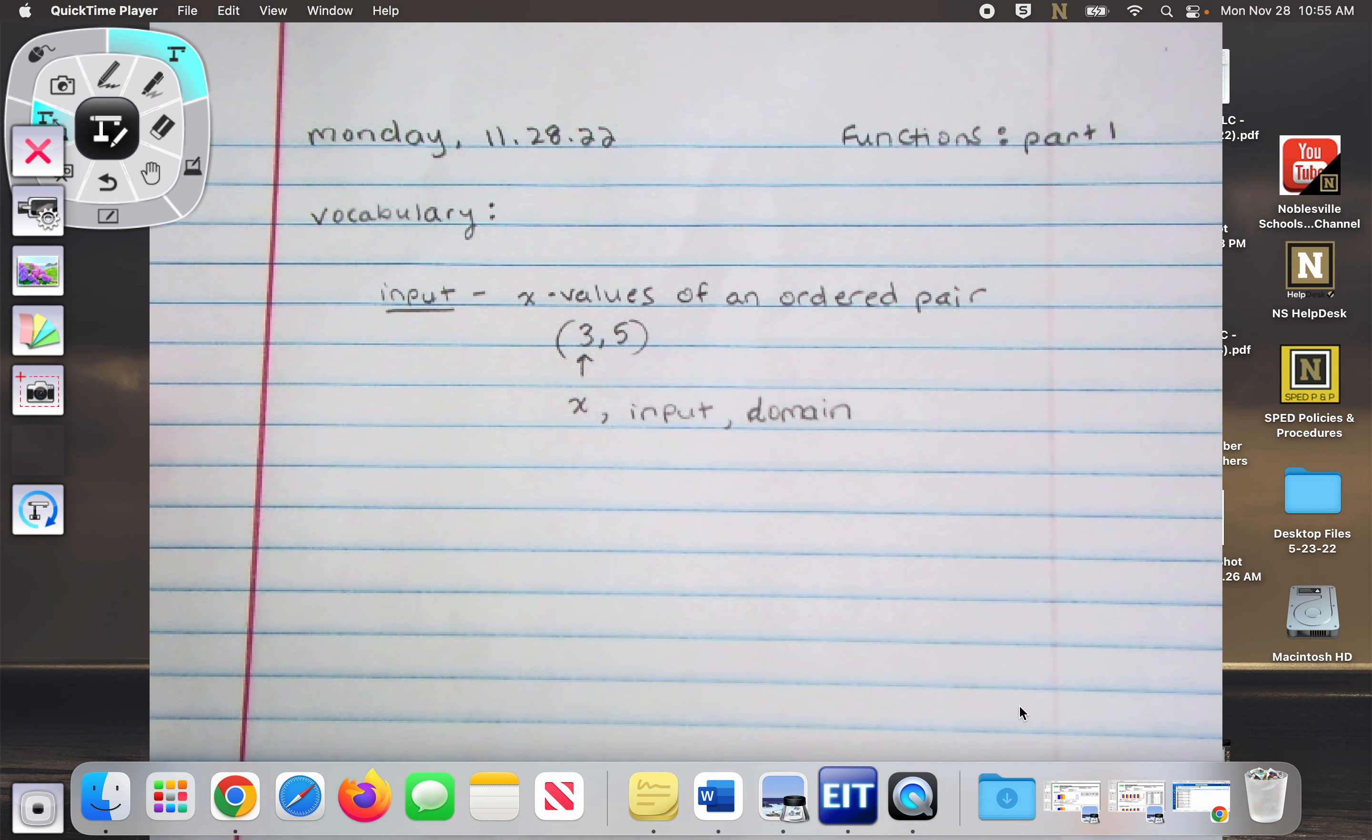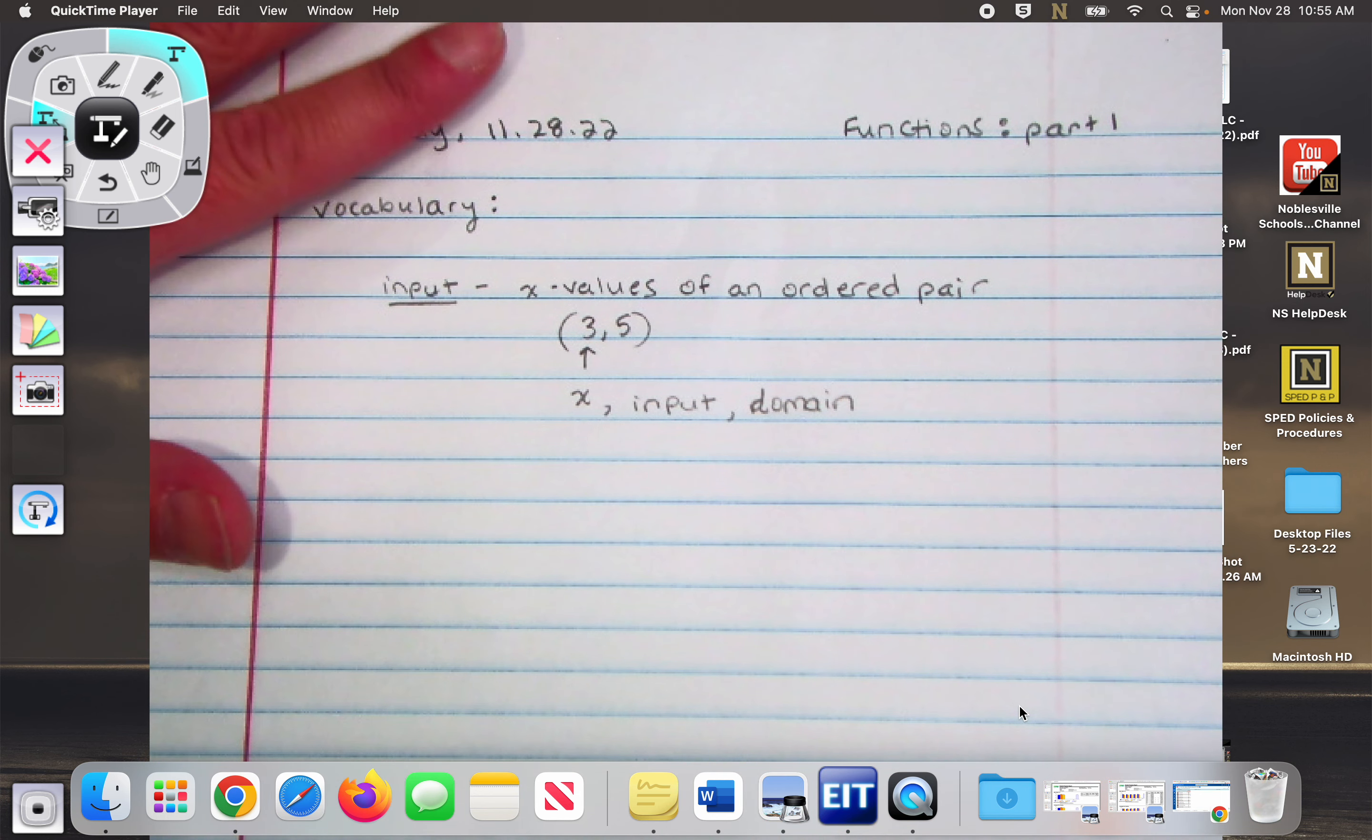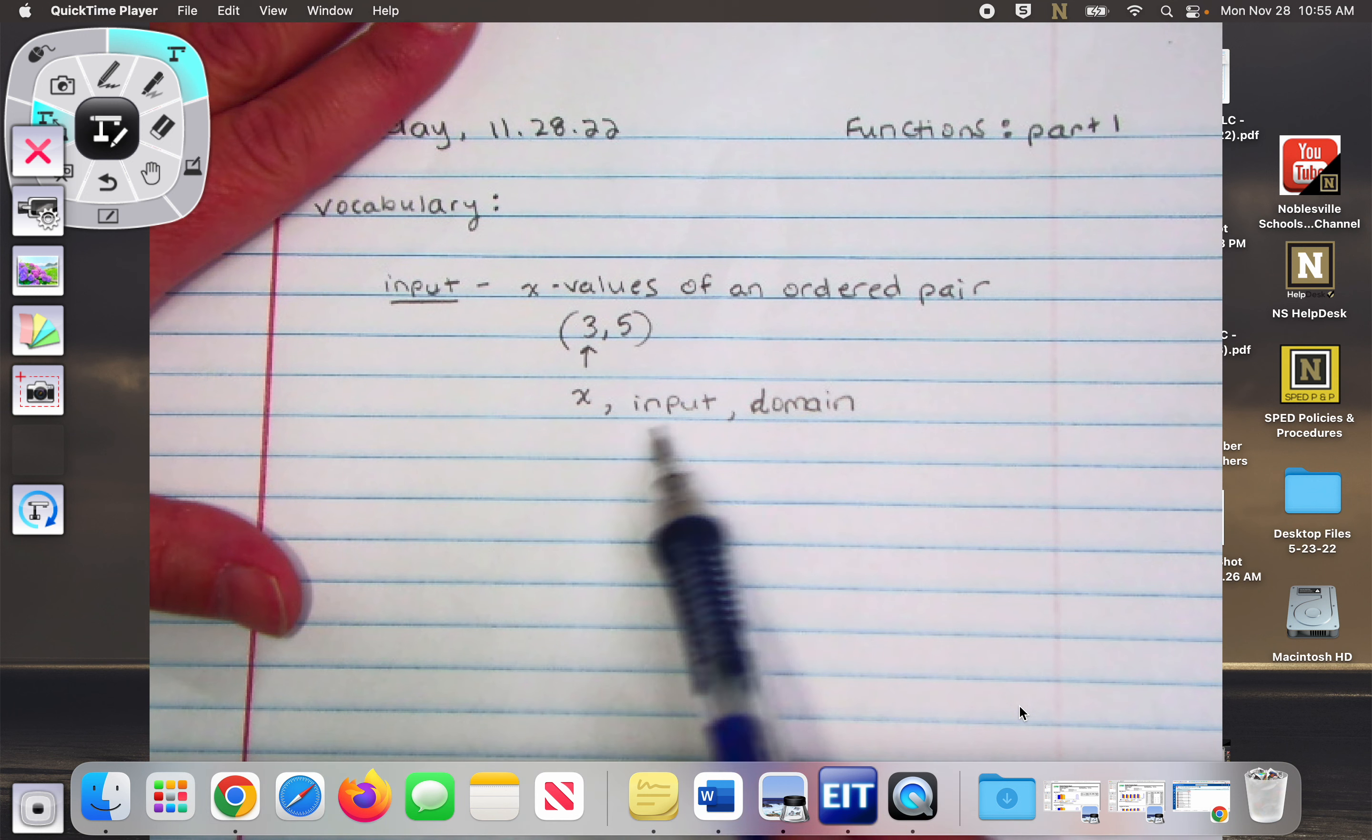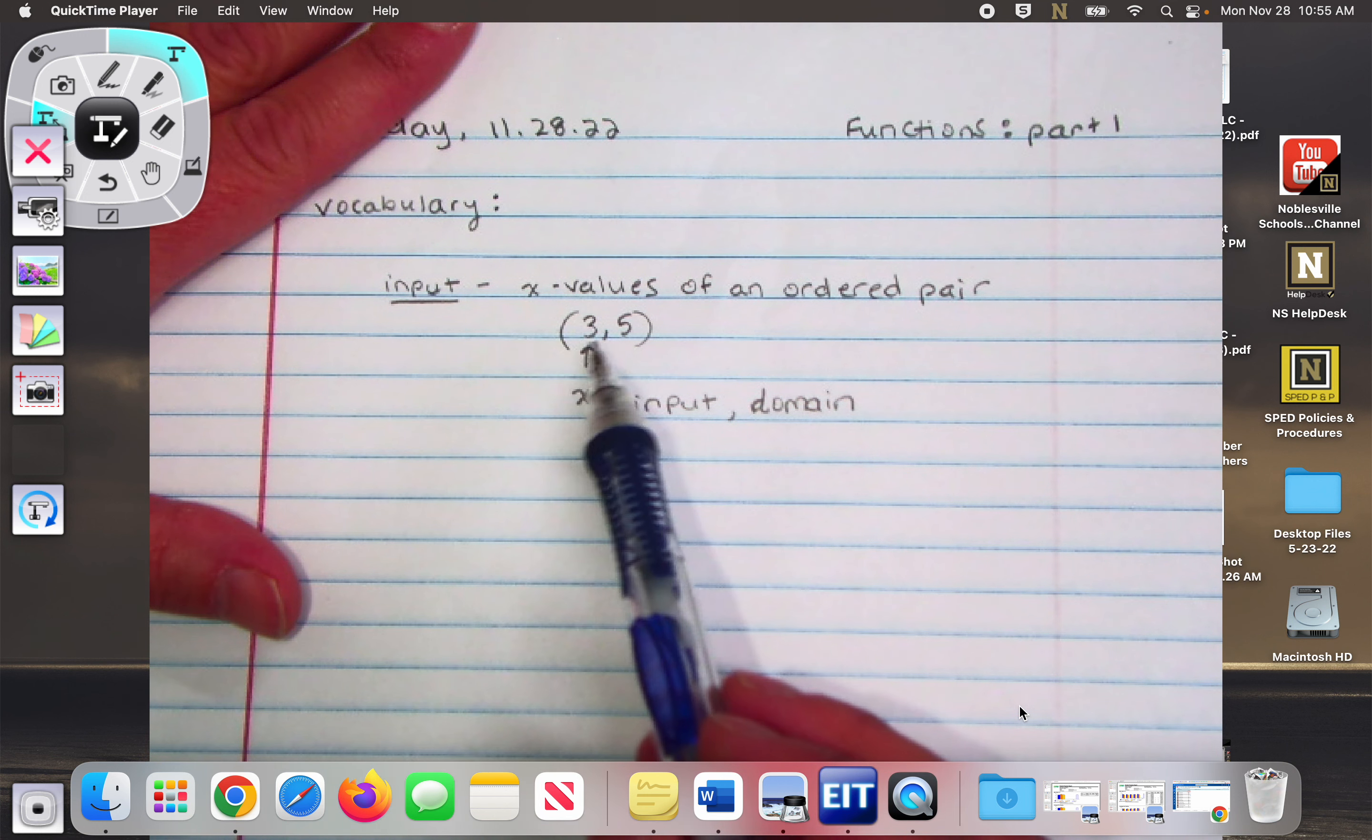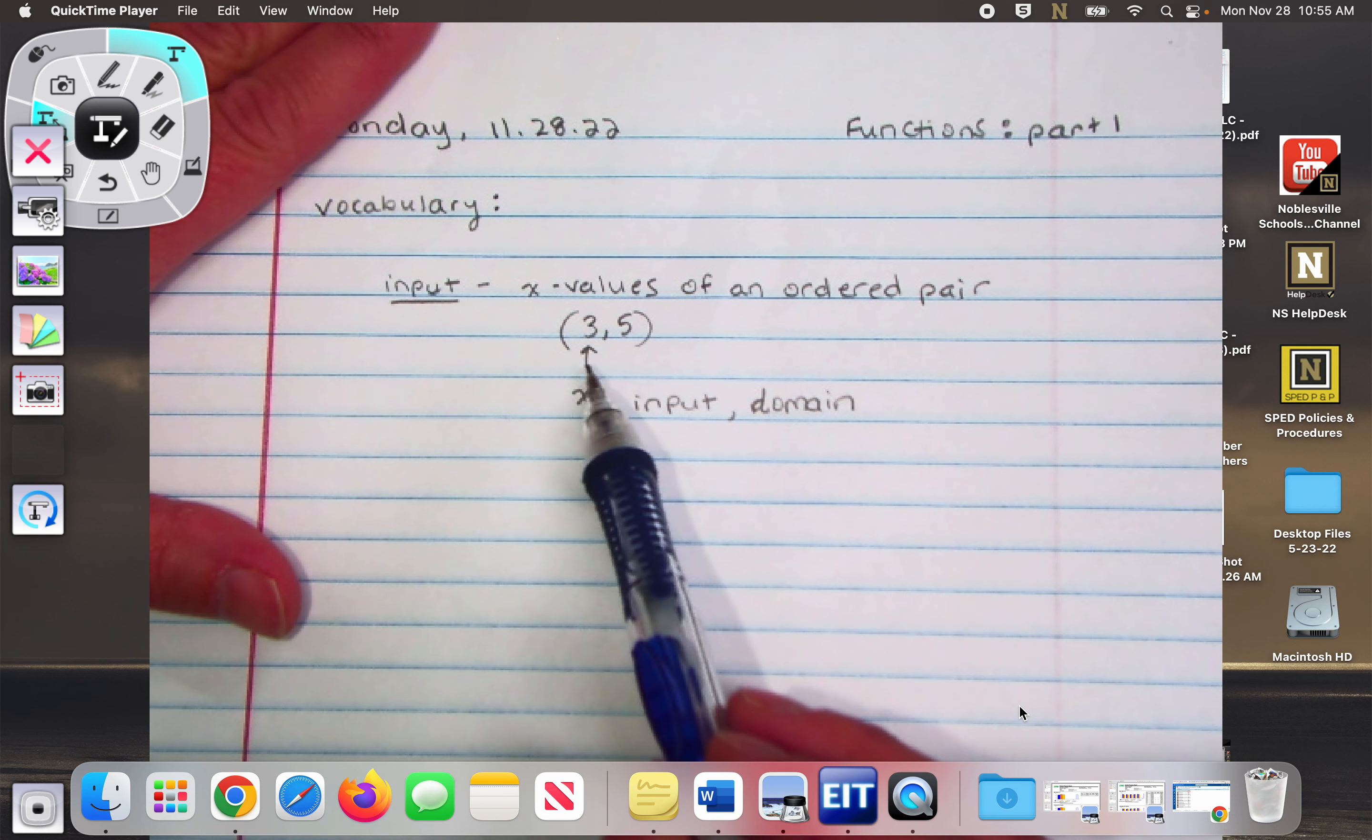And eventually we'll talk about it as being the domain. Okay, I hear lots of little conversations that need to stop. So the x, input, domain are all talking about this first number of an ordered pair. The very first number of an ordered pair is the x value.